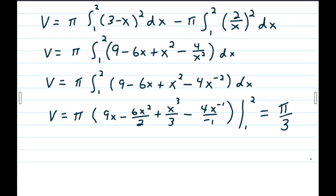Simplifying that a little bit, you really don't have a lot to simplify other than changing 4 over x squared into 4x to the negative 2. Then you just use your rules of calculus, most notably power rules. We have 9x minus 6x squared over 2 plus x cubed over 3 minus 4x to the negative 1 over negative 1. Plug in your values, and you get a solution of pi over 3.